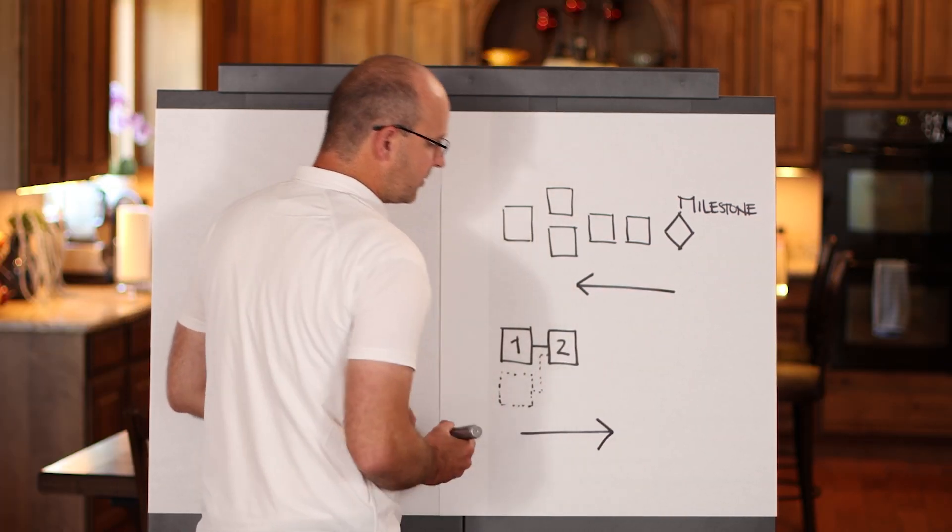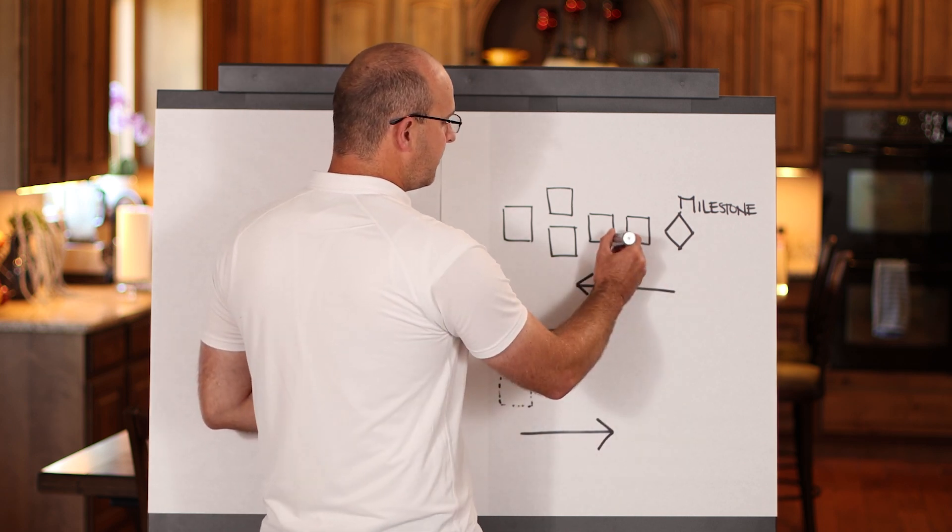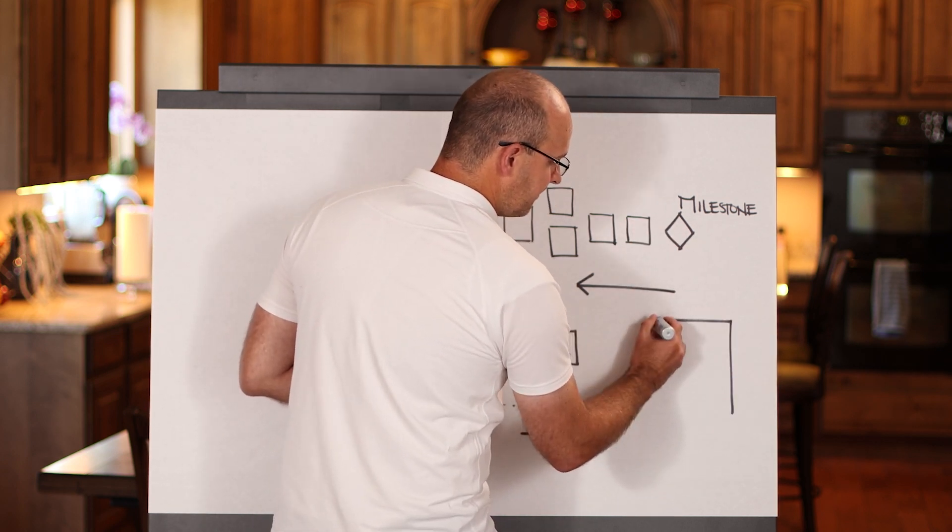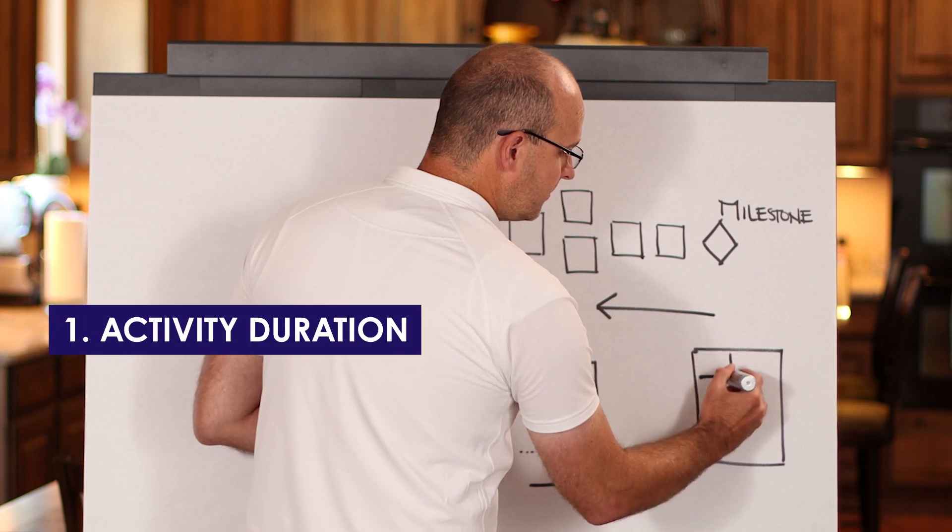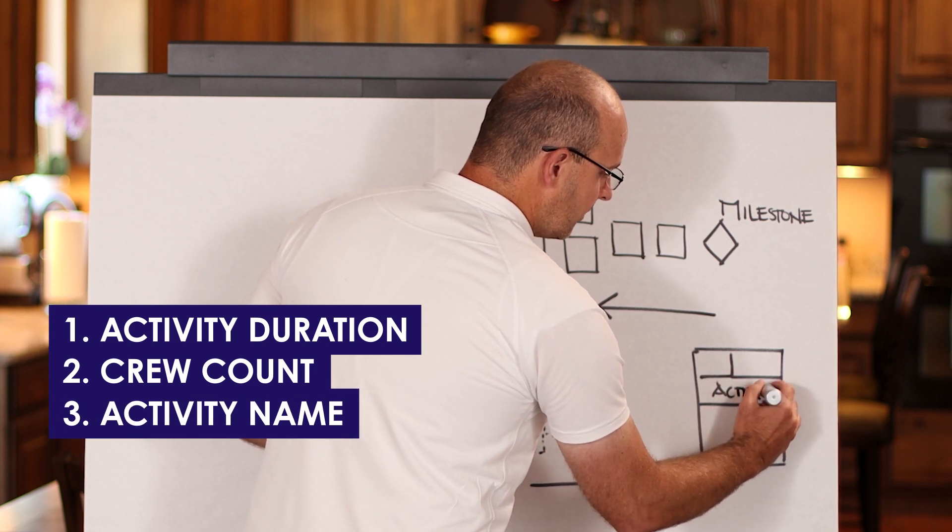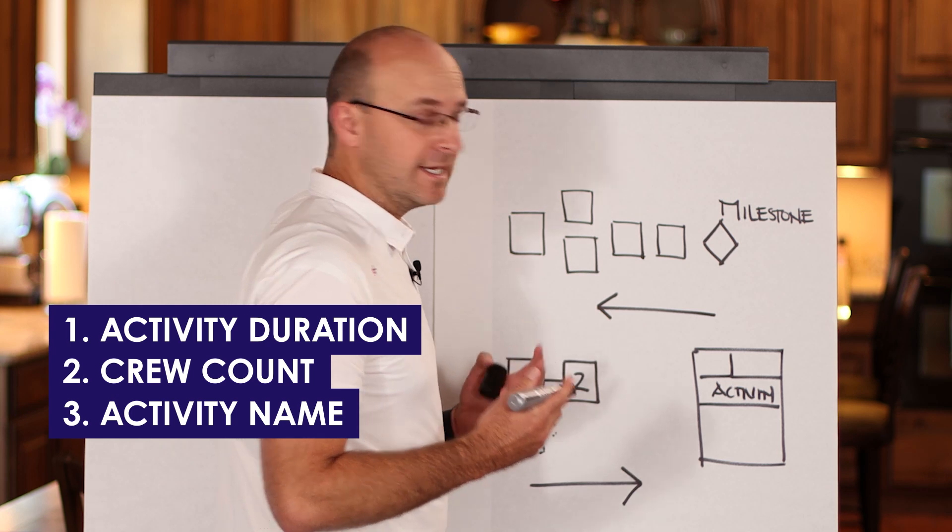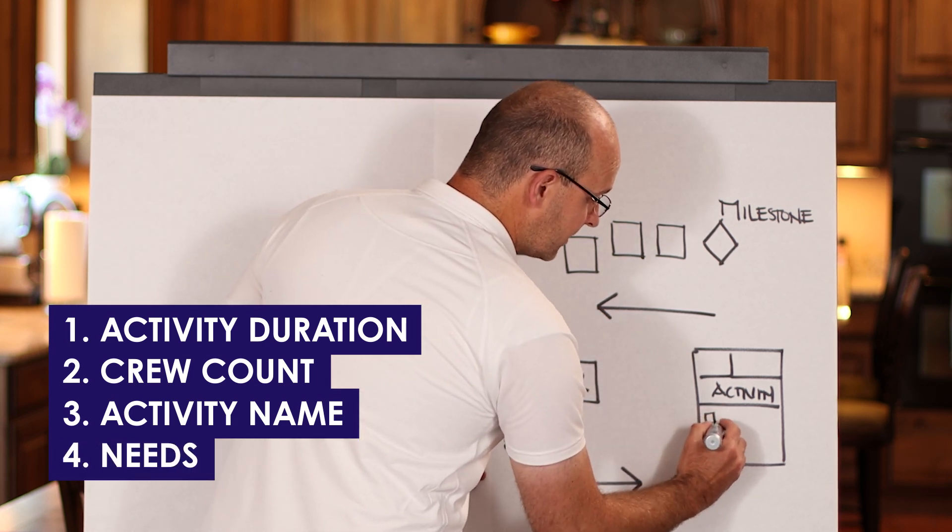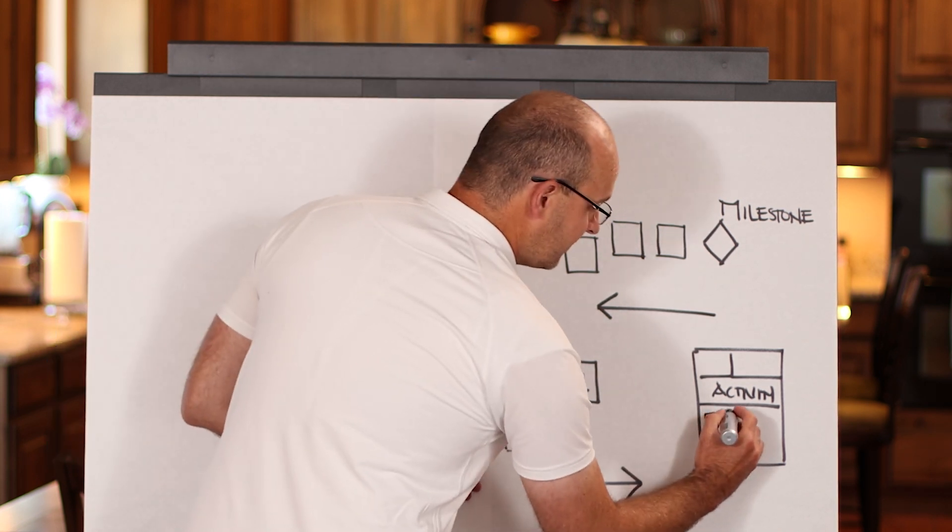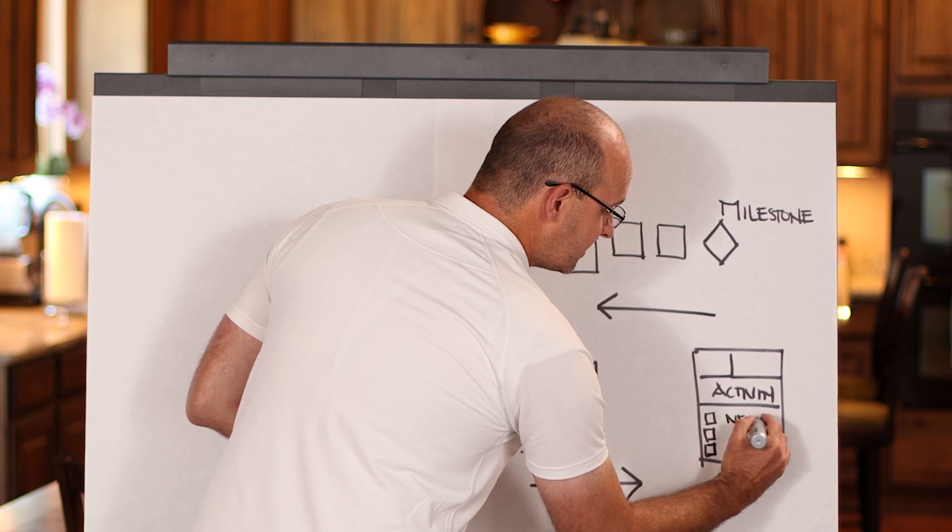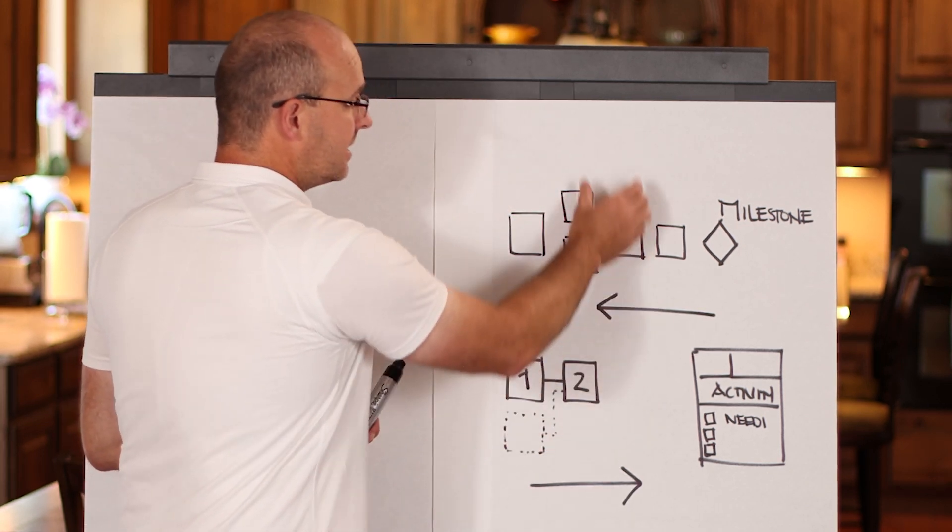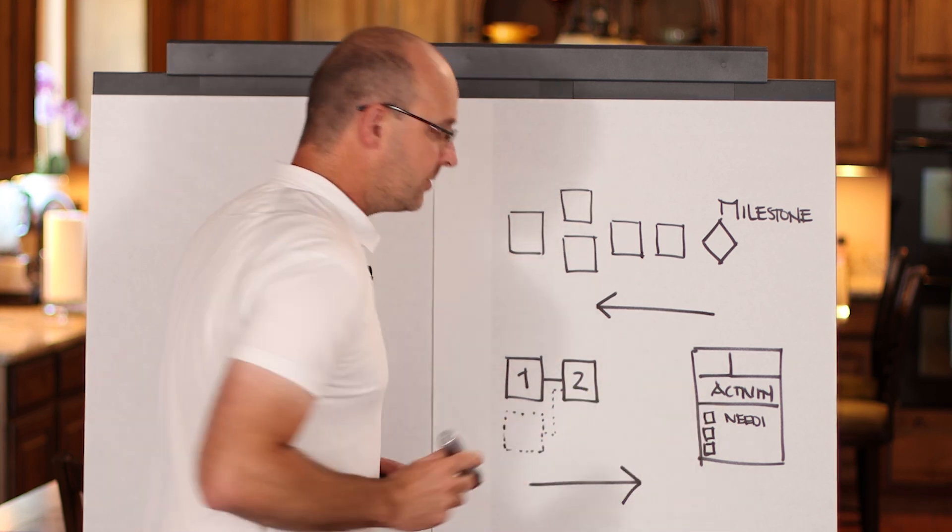Now when you do it backwards, when you're doing a pull plan, you're running it backwards and your sticky format will look like this. Typically you will have your activity duration, you will have your crew count, you will have the actual activity name, and then you'll have something really interesting. You'll have needs, or what some people call predecessors, or what some people call constraints.